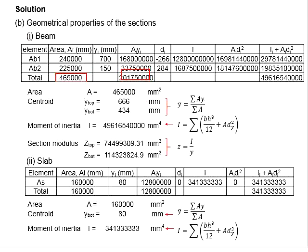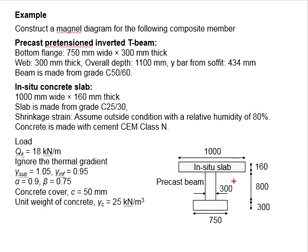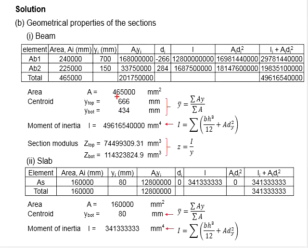When you divide this with this, you are able to determine its centroid which is 434 mm from the soffit of the beam. The ytop is calculated by the overall height of the precast member minus the ybottom, which equals 666 mm.